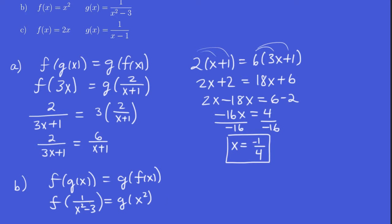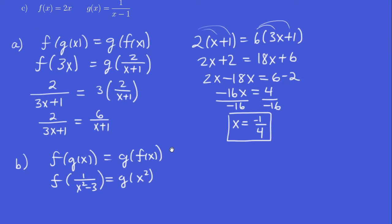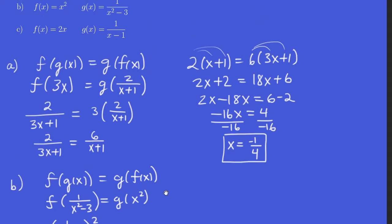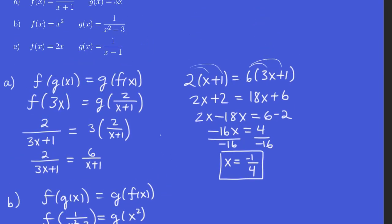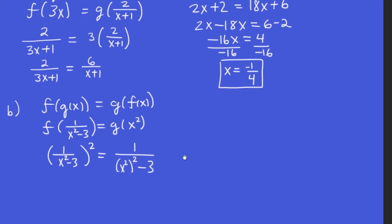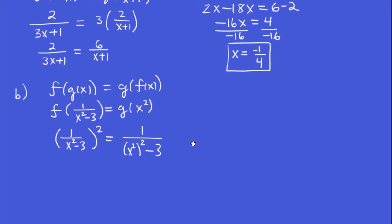Now what does f do to something? It squares it. So this is going to be 1 over x squared minus 3, all squared. And what does g do to something? It does 1 over that thing squared minus 3. So this will be 1 over that thing squared minus 3. And what is that thing? x squared.